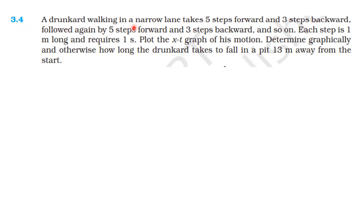A drunkard walking in a narrow lane takes 5 steps forward and 3 steps backward, followed again by 5 steps forward and 3 steps backward, and so on. Each step is 1 meter long and requires 1 second. Plot the XT graph of his motion and determine graphically and otherwise how long the drunkard takes to fall in a pit 13 meters away from the start.